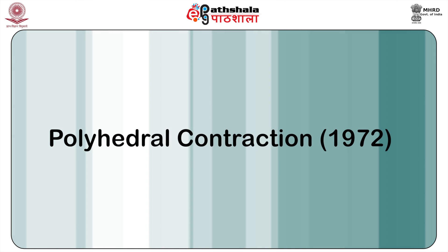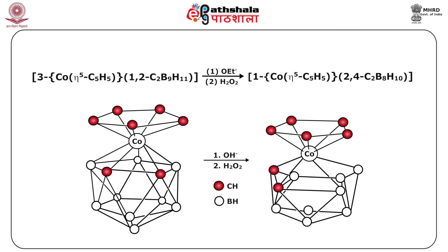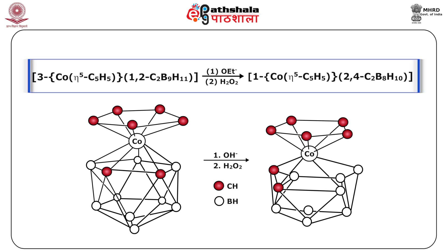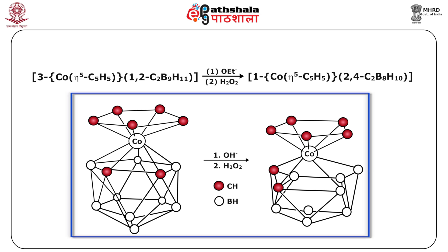The third method is polyhedral contraction, given in 1972. This involves the removal of one BH group from a closo-metallocarburane by nucleophilic base degradation, followed by oxidative closure of the resulting nido-metallocarburane complex to a closo species with one vertex less than the original. For example, 3-Co(eta5-C5H5)-1,2-C2B9H11 in the presence of OEt(-) and peroxide gives 1-Co(eta5-C5H5)-2,4-C2B8H10.